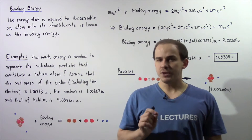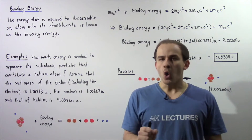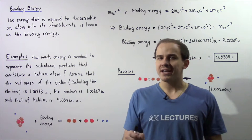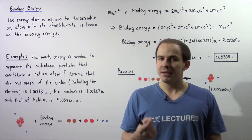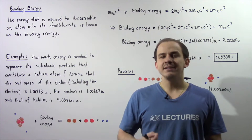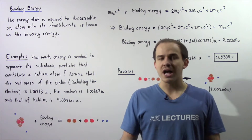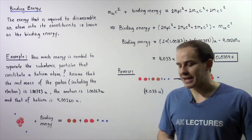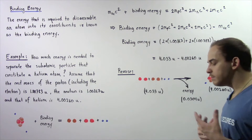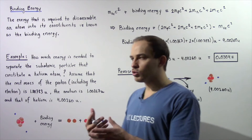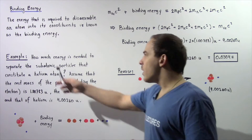In physics, we define the binding energy as the total mechanical energy that is needed to disassemble a complete atom into its constituent subatomic particles — into its neutrons, protons, and electrons. To see exactly what binding energy is and how it works, let's look at the following example.